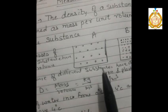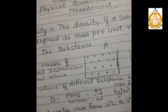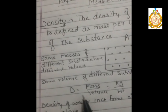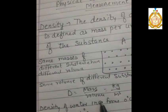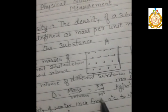Similarly, the same volume of different substances have different masses. Take the example of iron and plastic — if you have one kg of iron and one kg of plastic, they have the same mass but different volumes. Density is denoted by D. The formula of density is mass divided by volume. The SI unit of mass is kg, the SI unit of volume is meter cube, so the SI unit of density is kg per meter cube.